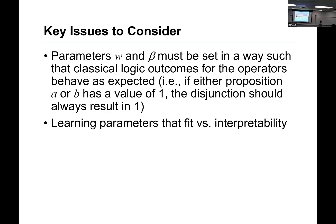So parameters w and beta, they must be set in a way such that the classical outcomes on the operators behave as expected with the classical operator. Also, we want to have this fit with some level of interpretability. Weights associated with each of the inputs to an operator, you have some intuition - that operator doing A and B, and the A input has a higher weight than B, maybe it's thinking A is somehow more important.